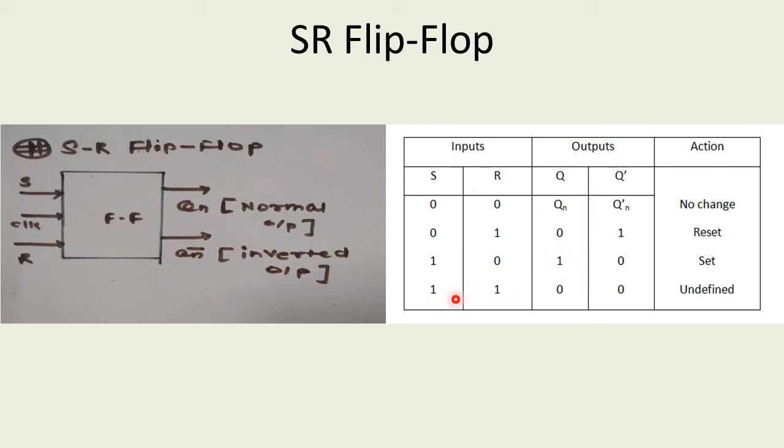The last combination when it is 11 is going to be undefined. This is also called race around condition because here both outputs are going to be 00. This condition is not allowed because the first output is normal and the second is inverted, so they should be complementary to each other. This is the race around condition or it is undefined in SR flip-flop.